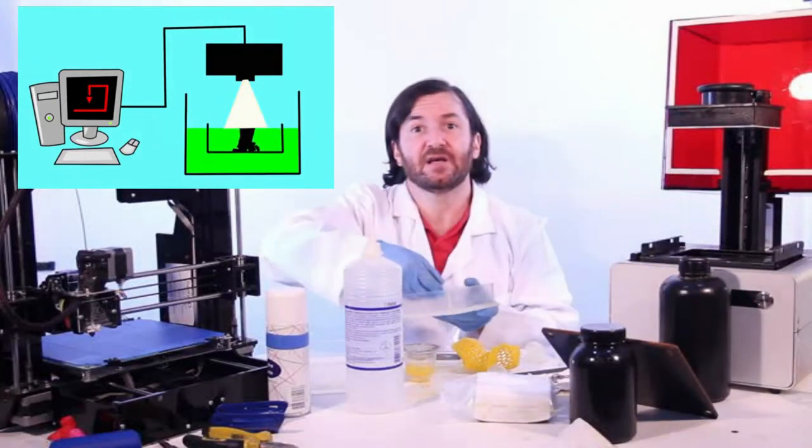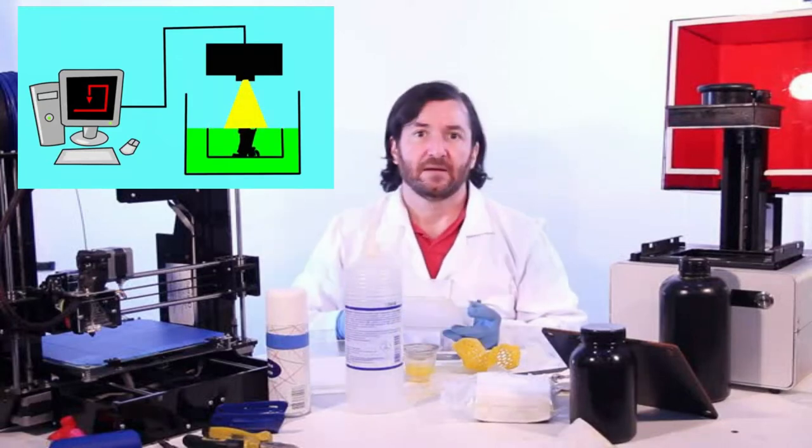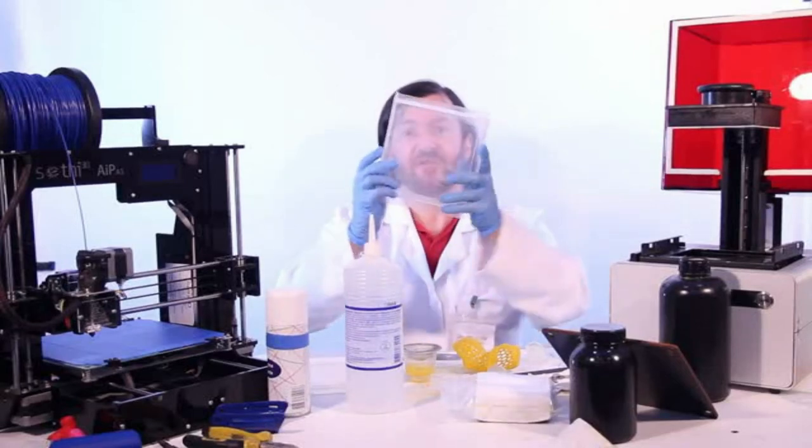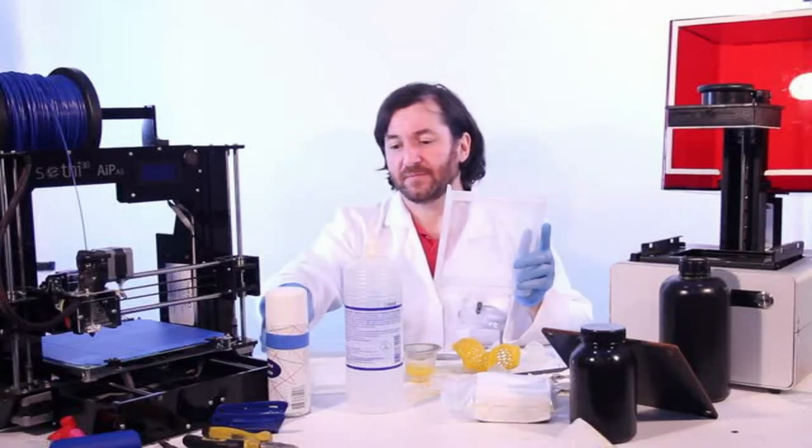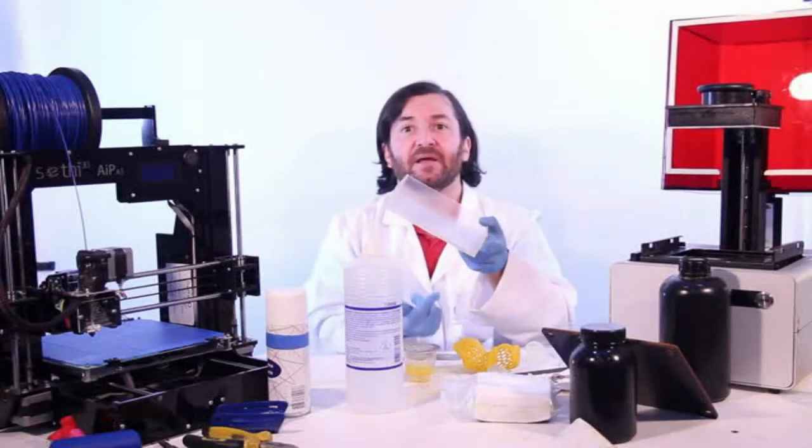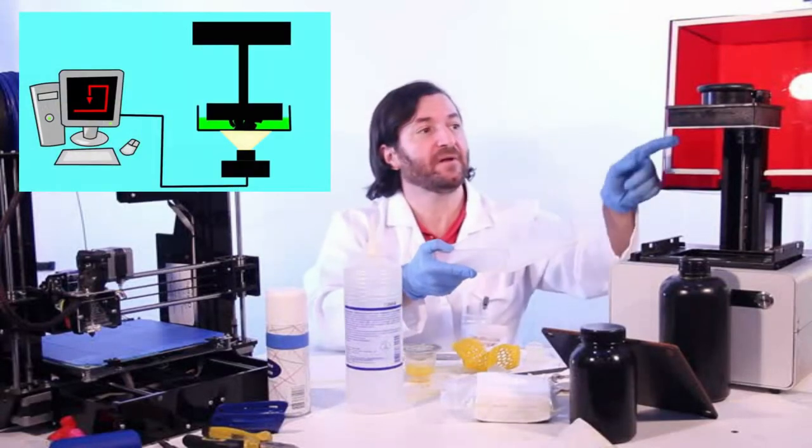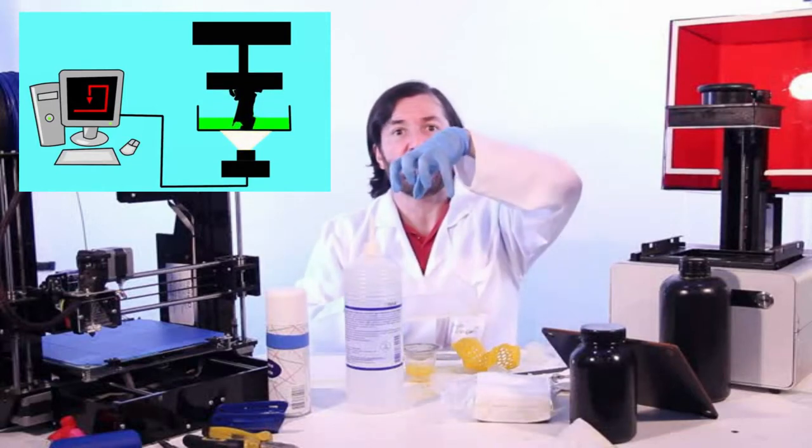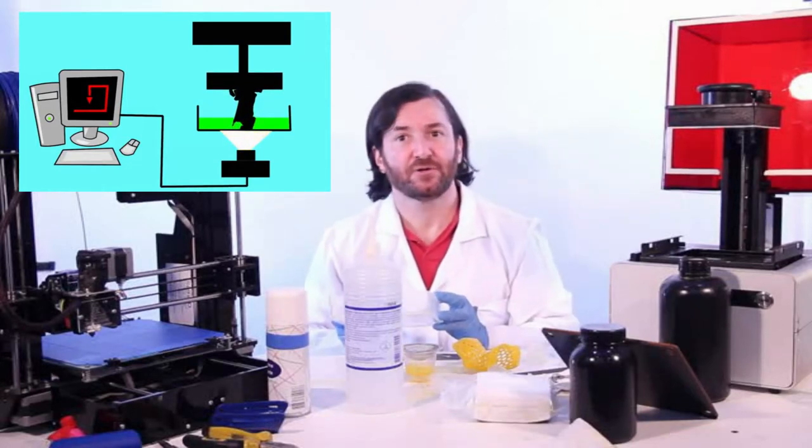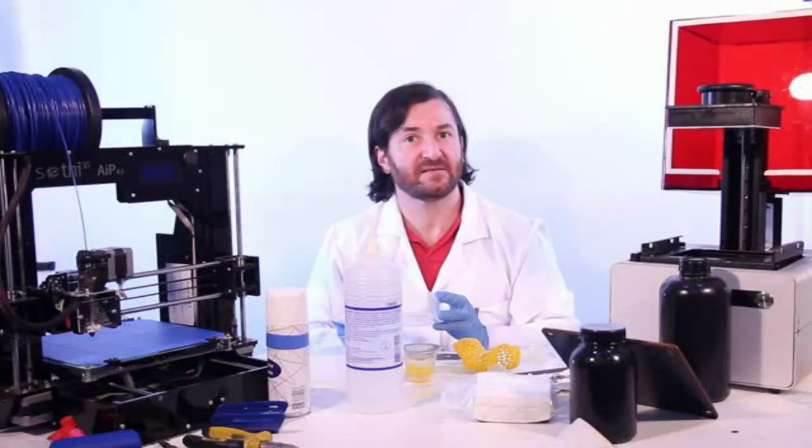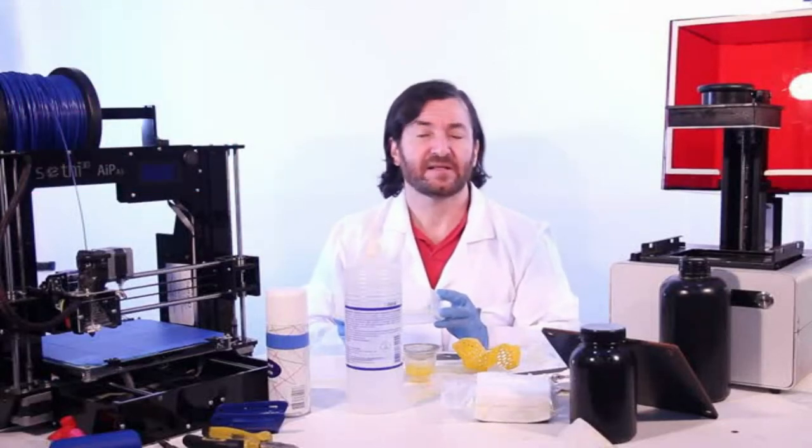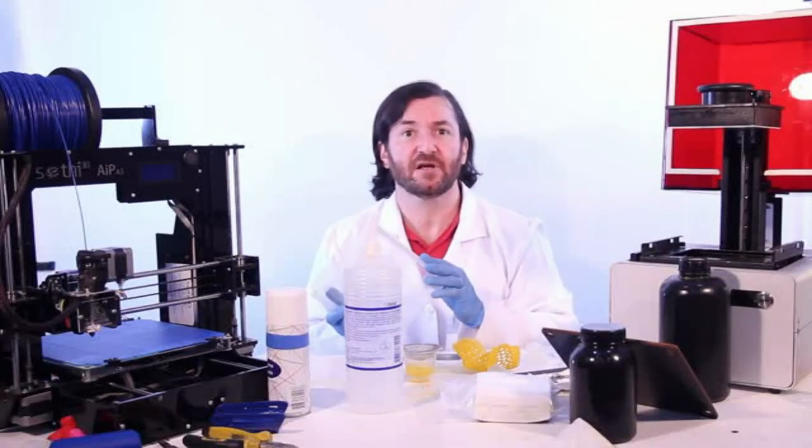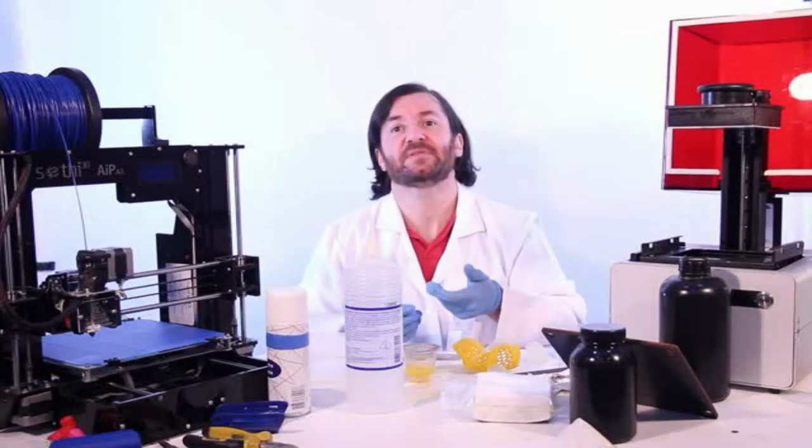The vat might be increasingly filled with resin or have a platform which is lowered into the vat. However, the much more popular bottom-up method sports a vat with a transparent bottom which is hit by the beam, and a rising platform to which the first layer of hardened resin sticks, pulling the part. The bottom-up approach requires a lot less resin to print and has less waste, but suffers from degradation of the vat due to the loss of transparency. It also prints the part upside down.